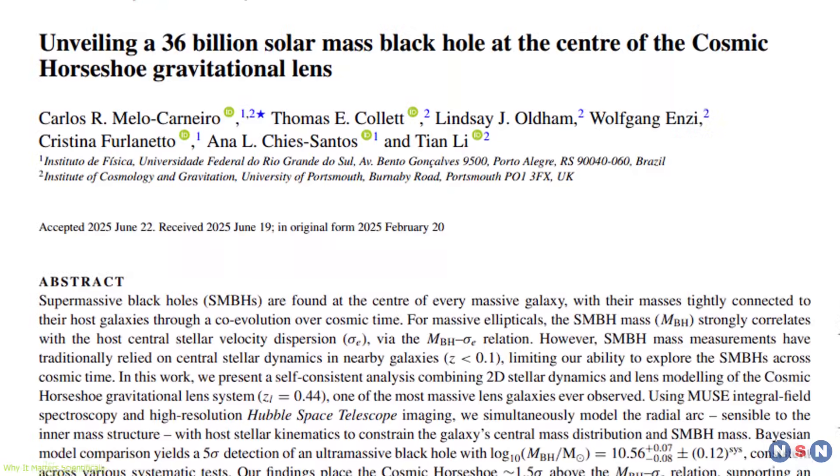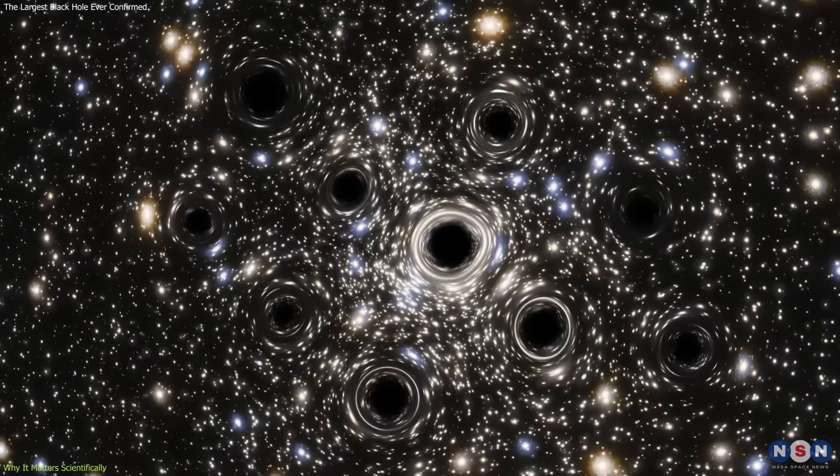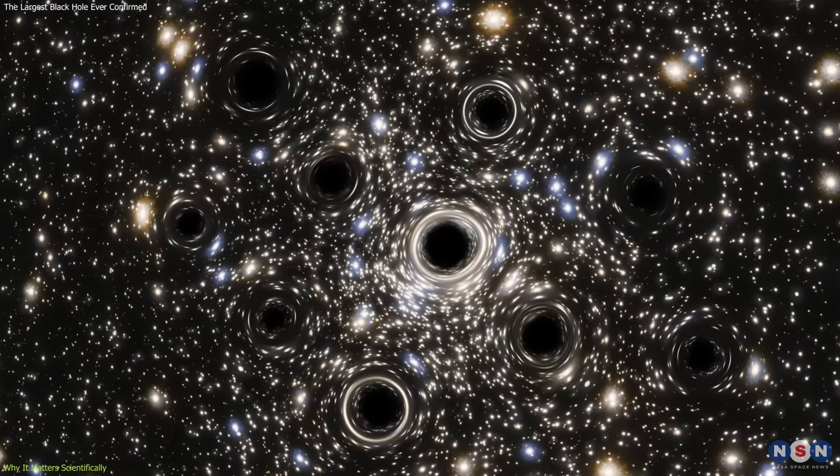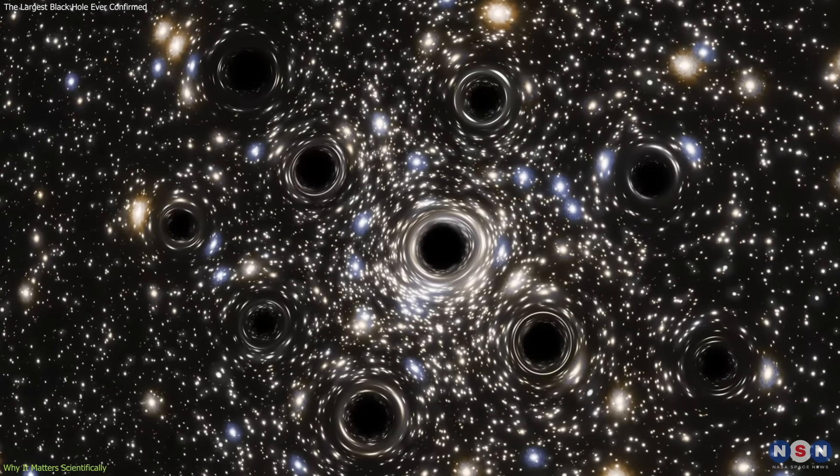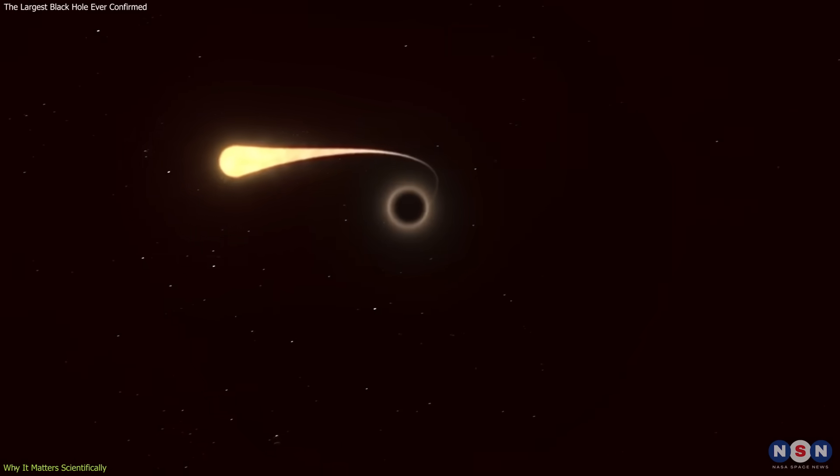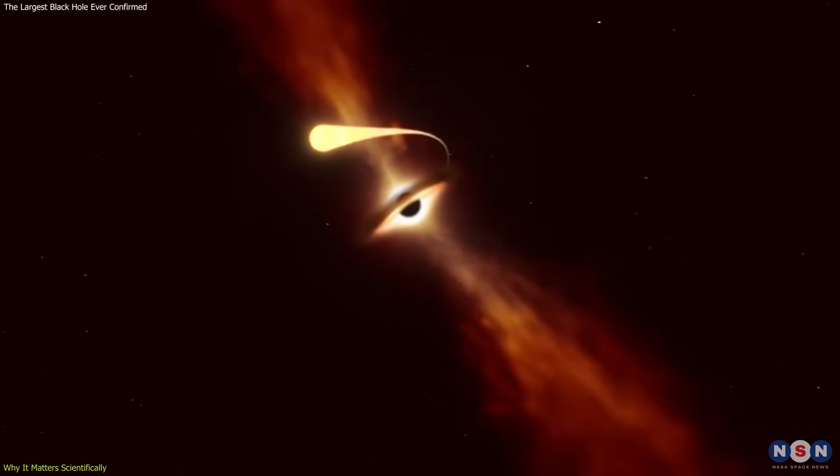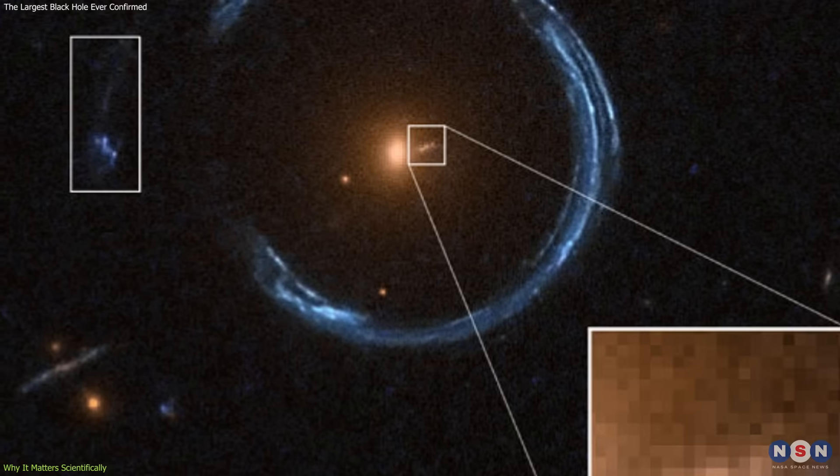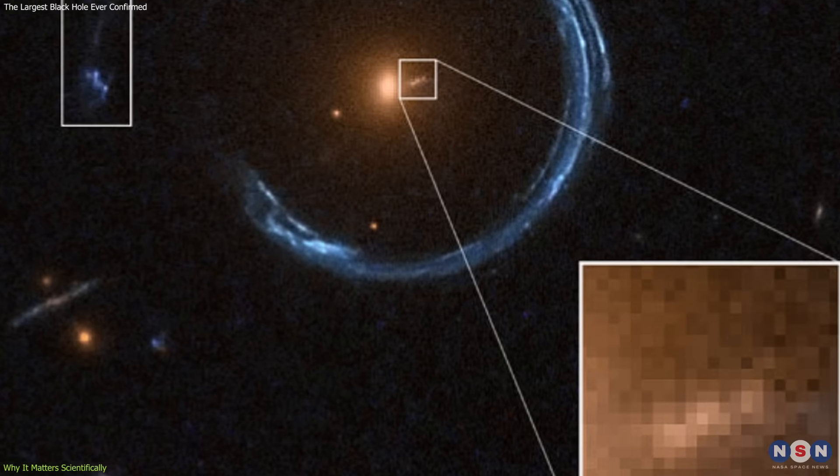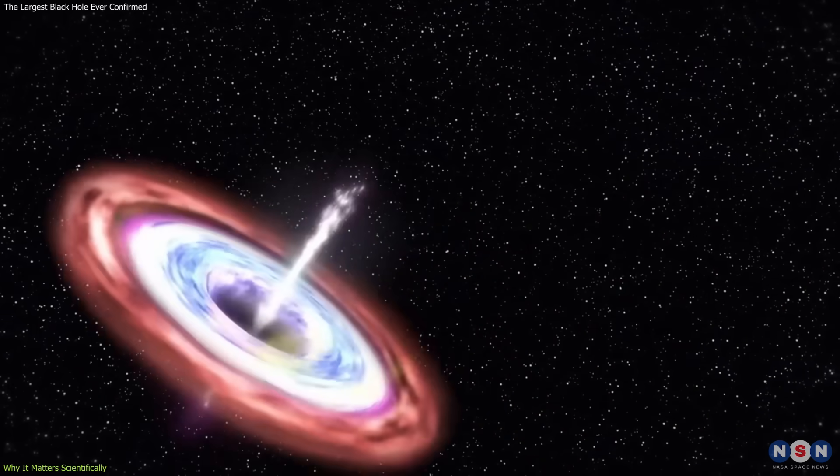This measurement also feeds into the debate about whether these have an upper mass limit. Theoretical models suggest that beyond around 50 to 100 billion solar masses, these can no longer feed efficiently. Gas either falls in too quickly to add more mass, or gets expelled by radiation and winds. With 36 billion suns, it sits close to this theoretical ceiling, making it a natural test case for these ideas.